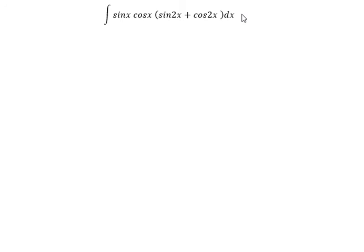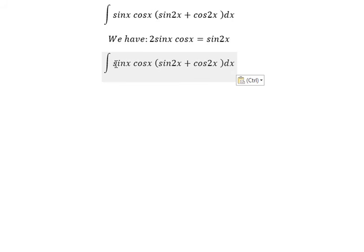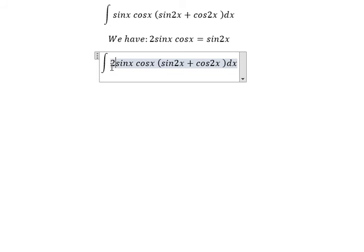I will show you the technique how to answer the question. We have 2 sine x cosine x equal to sine 2x, so we will apply this formula here because we don't have the number 2, so we put number 2 later.